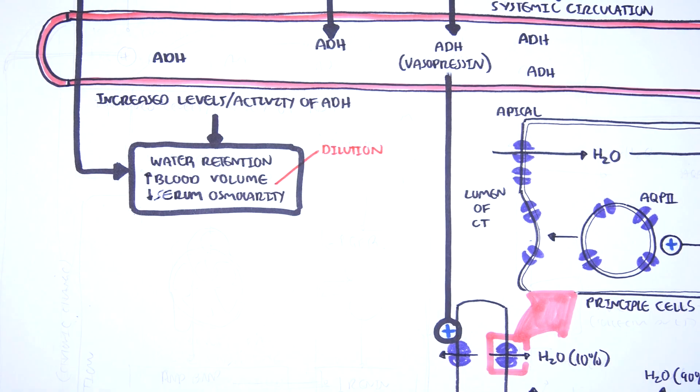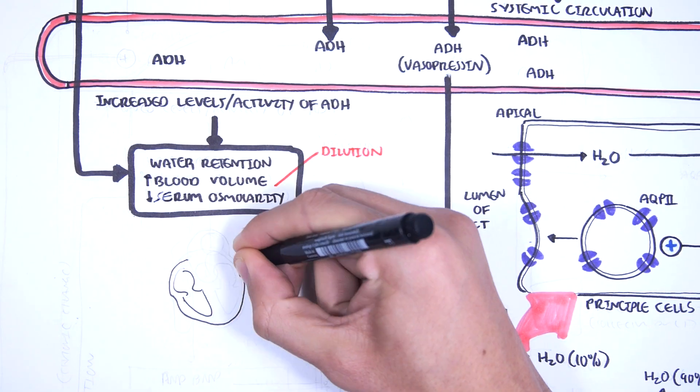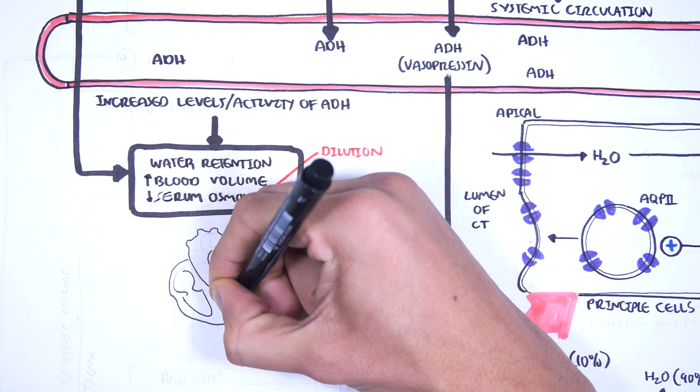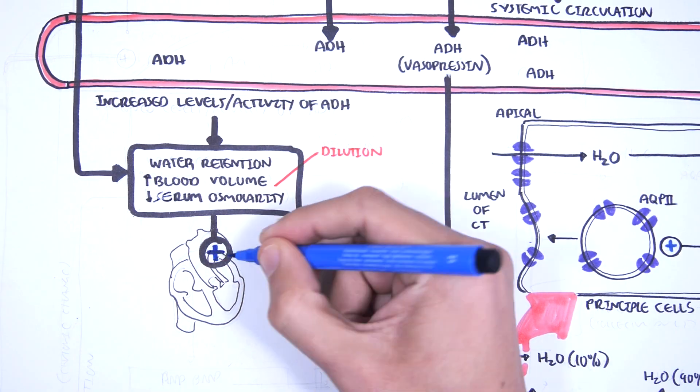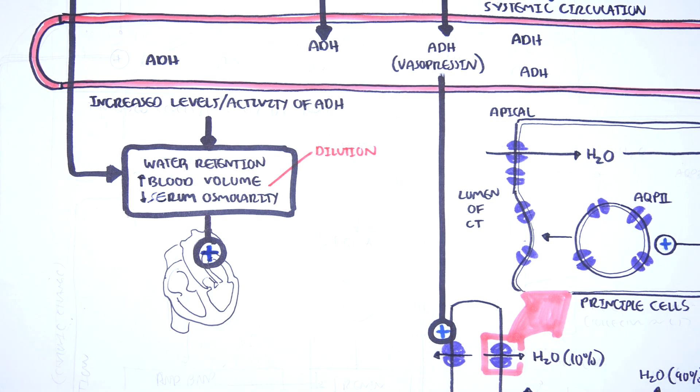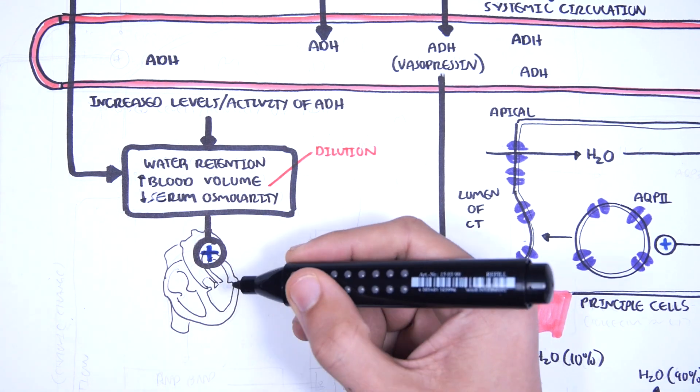Now, the syndrome of inappropriate antidiuretic hormone secretion continues, and you get an increase in blood volume for a while. After a while, you will actually cause stretching of the heart muscle walls in the atrium and in the ventricles. And when this happens, the heart produces natriuretic peptides.